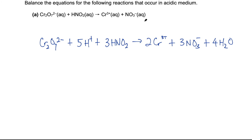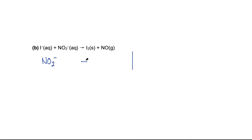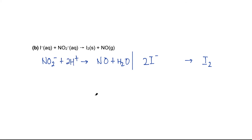Let's try the second example. We separate the oxidation and reduction half equations. Step 1: balance the atoms that are oxidized or reduced — nitrogen is balanced, and we balance iodine. Then we add water to balance the oxygen, and H⁺ ions to balance hydrogen. Now we balance the charges: the right side is neutral while the left side has an overall plus 1 charge, so I add one electron. On the other half equation the left side has minus 2, so I add 2 electrons on the right.